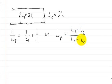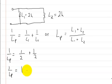Let's do this real quick. For the first method, 1 over Lp equals 1 over L1, that's 1 over 2, plus 1 over 2. So 1 over Lp equals 1 half plus 1 half, which equals 1. Therefore, the inductance in parallel is 1 Henry.